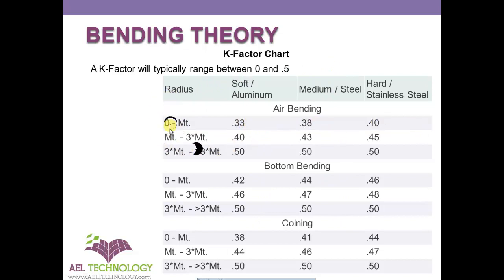If the radius is between one material thickness to three times the material thickness, this will be the K factor for aluminum, medium steel, and hard steel. Based on the radius and type of bending, we have identified different K factors for all the materials.